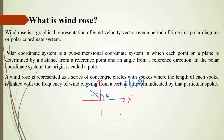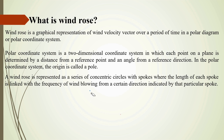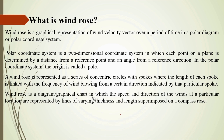In simpler language, a wind rose is represented as a series of concentric circles with spokes, where the length of each spoke is linked with the frequency of wind blowing from a certain direction indicated by that particular spoke. A wind rose is a diagram or graphical chart in which the speed and direction of the wind at a particular location are represented by lines of varying thickness and length superimposed on a compass rose.